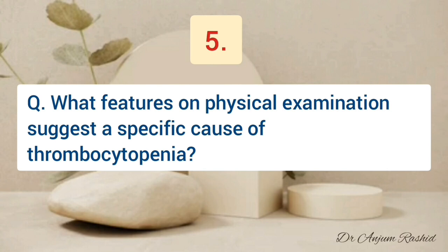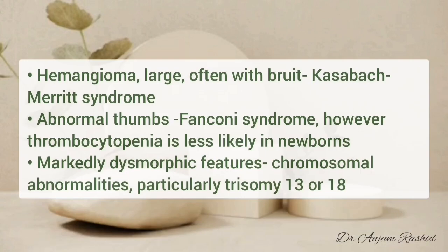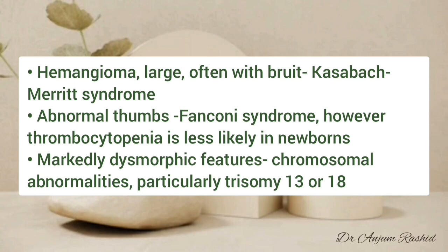What features on physical examination suggest a specific cause of thrombocytopenia? Blueberry muffin rash indicates TORCH infection — toxoplasmosis, rubella, cytomegalovirus, or herpes virus. Absent red reflex indicates absent red eye syndrome. Palpable flank mass and hematuria indicate renal vein thrombosis. Hemangioma, especially large and with bruit, indicates Kasabach-Merritt syndrome. Abnormal thumbs indicate Fanconi anemia, though thrombocytopenia is less likely in newborns. Markedly dysmorphic features indicate chromosomal anomalies, especially trisomy 13 or 18.